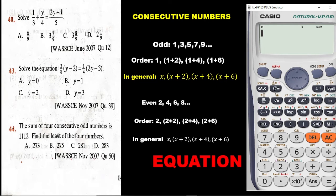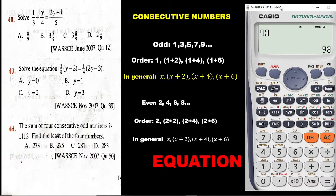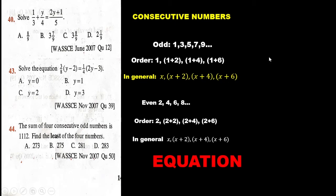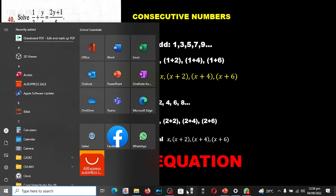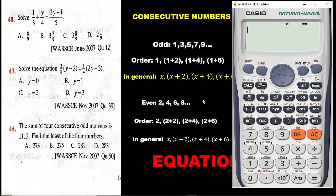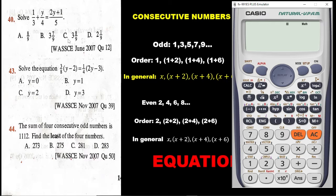Let's enter this equation on the calculator. First, let's clear the calculator to be sure that the values we get will always be exact. To clear the calculator, you press shift and then press 9, select 3, then press equals and you are done. Now, 1 over 3 is a fraction — press the fraction button, put 1 up, move down and key in 3, then move out.